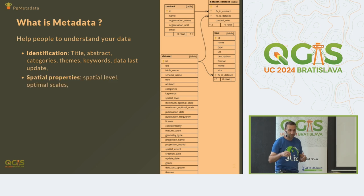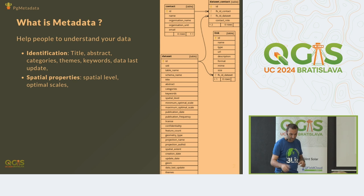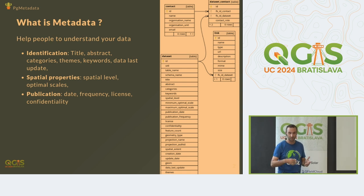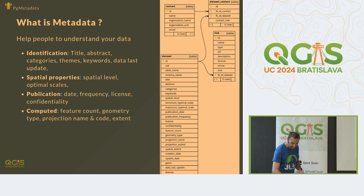It can be spatial properties — the spatial level: is it designed at the city level, or for the province or the country? Optimal scales at which the data can be visible. It can be publication info like the date, the frequency of update, the license, the confidentiality of the data — is it private? Is it open data? It can also be what we call computed: the feature count, the geometry type, the projection, etc.